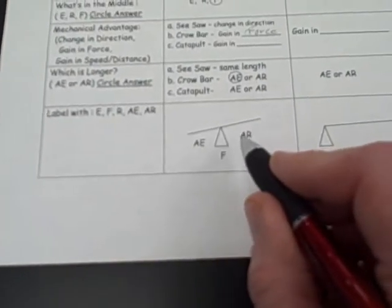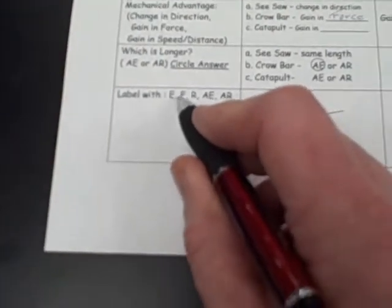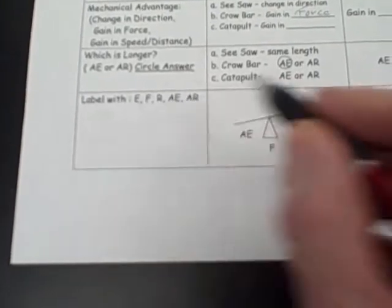Then, finally, on the diagram down here, you label the effort, the fulcrum, the resistance, the effort arm, and the resistance arm.